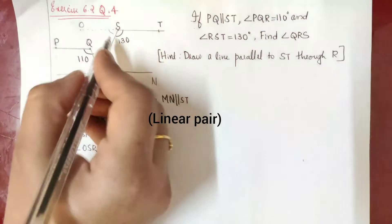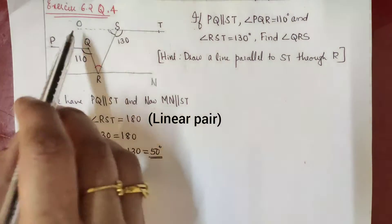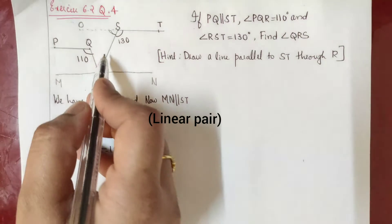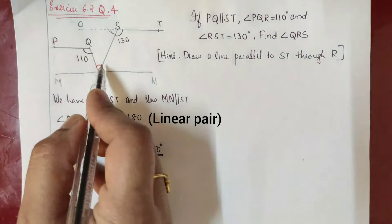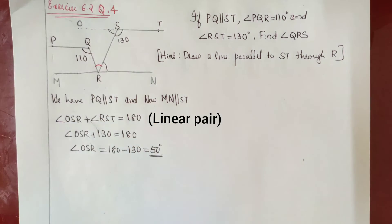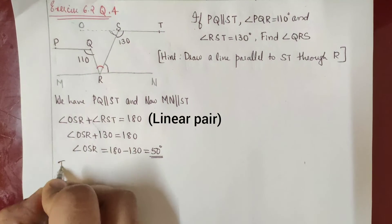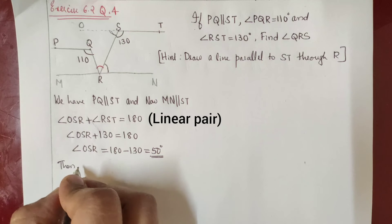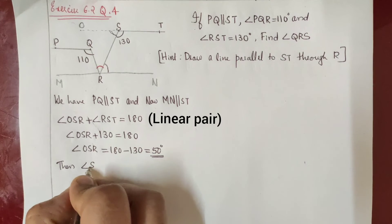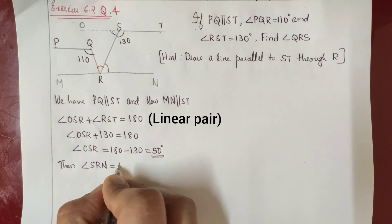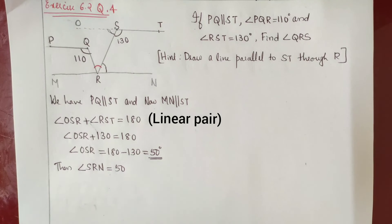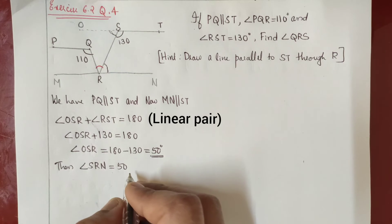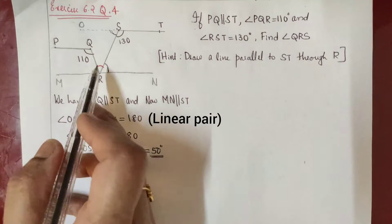These lines MN and OT are parallel, and RS is the transversal. So if angle OSR is 50 degrees, then angle SRN will also be equal to 50 degrees, because these are alternate interior angles and they are equal for two parallel lines.